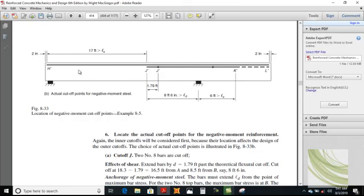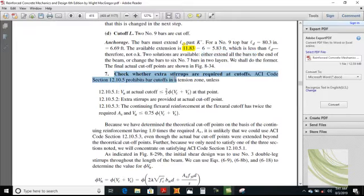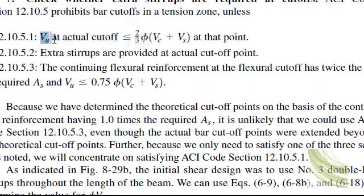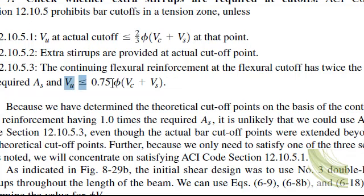The final cut-off points are L dash, J dash, and H dash for negative reinforcement. Now check the shear criterion: are extra stirrups required at cut-off points? ACI code section 12 prohibits bars cut off in a tension zone. Three criteria must be satisfied, but we just need to check one. Extra stirrups were checked in the Nelson book in the last lecture.